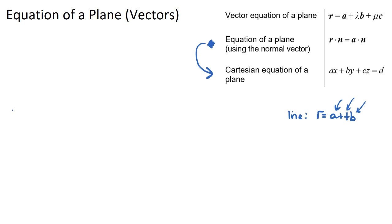Similarly, for the vector equation of a plane, r is any position vector on our plane, a is still a fixed known position on the plane, and the two parameters λ and μ are attached to b and c. These are two direction vectors — we need two to find the equation of a plane, and they must be non-parallel to each other but both parallel to the plane.